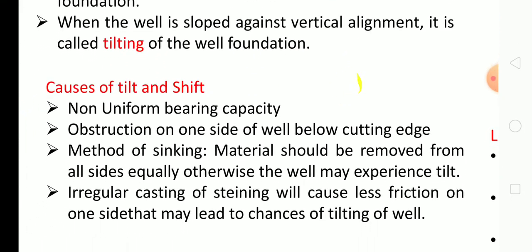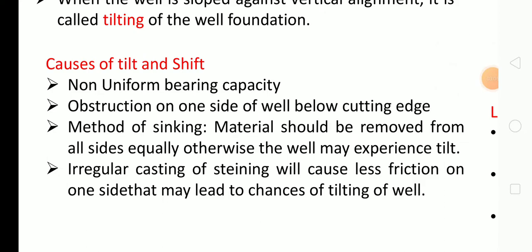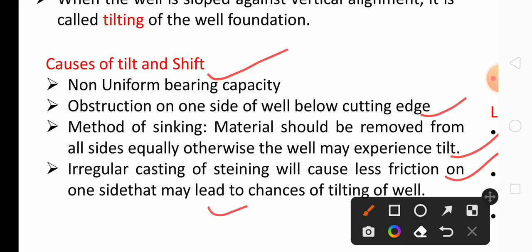Now we are talking about the causes of tilt and shift. The first cause is non-uniform bearing capacity — if the bearing capacity of soil is non-uniform, tilt and shifting may occur. Second is obstructions on the side of the well below the cutting edge — if there is an obstruction below the cutting edge, tilt and shift may occur. Third, during sinking, material should be removed from the outside equally; otherwise the well may experience tilt. Irregular casting of the steining causes less friction on one side, which may also lead to tilting.